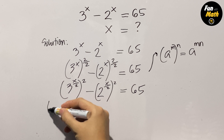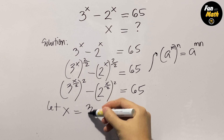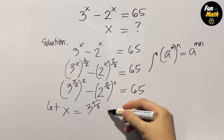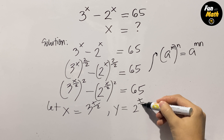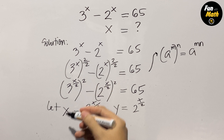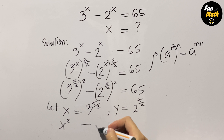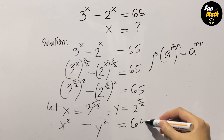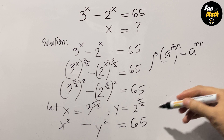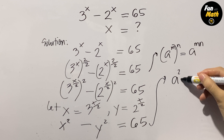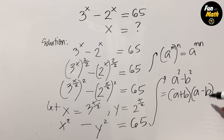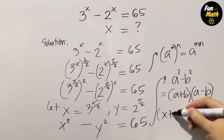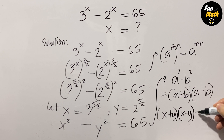Next, we are going to let x equal 3 to the power of x over 2, and let y equal 2 to the power of x over 2. Therefore, this becomes x squared minus y squared equals 65. There is a rule: a squared minus b squared is also equal to a plus b times a minus b. So we can write it as x plus y times x minus y is equal to 65.